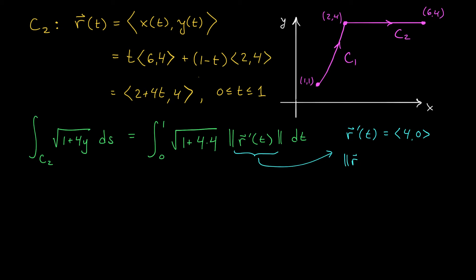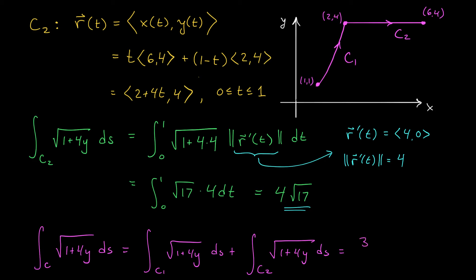And you can see here this is a vector of norm 4. So our integral simplifies to the integral from 0 to 1 of the square root of 17 times 4 dt. And at this point, it's quite easy to evaluate. We simply have 4 root 17. Putting it all together, we get that the line integral along C of root 1 plus 4y ds is going to be the line integral along C1 of root 1 plus 4y ds plus the line integral along C2 of root 1 plus 4y ds. That gives us a final answer of 31 over 27 plus 4 root 17.